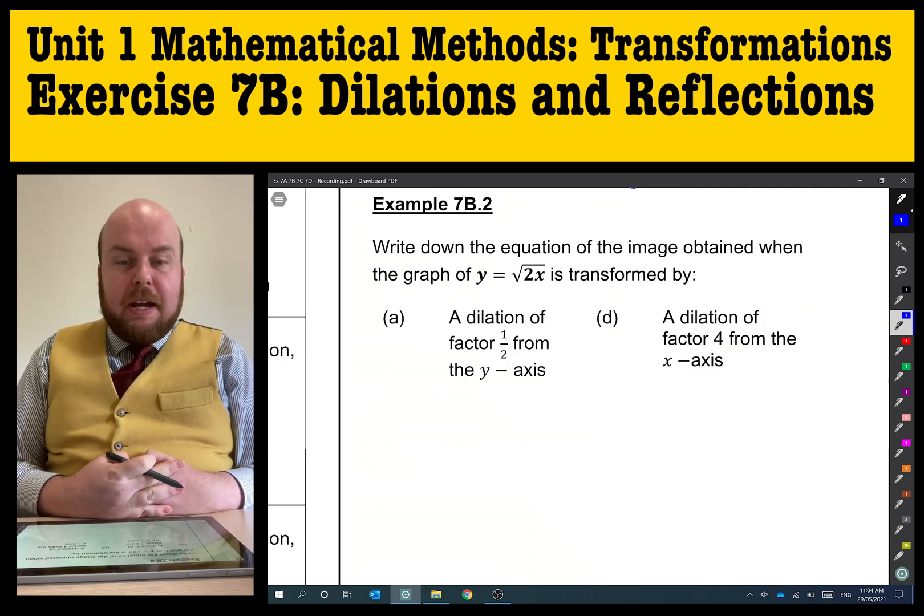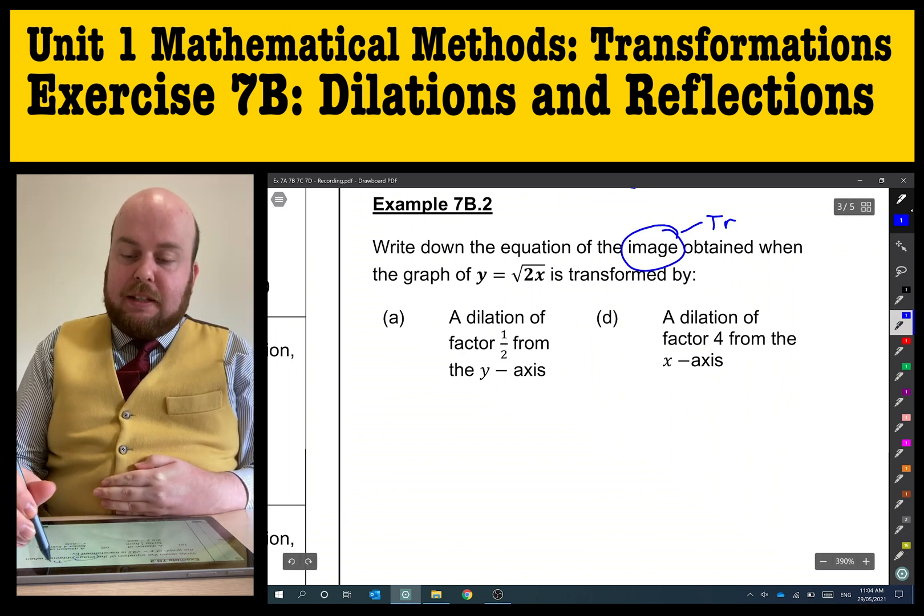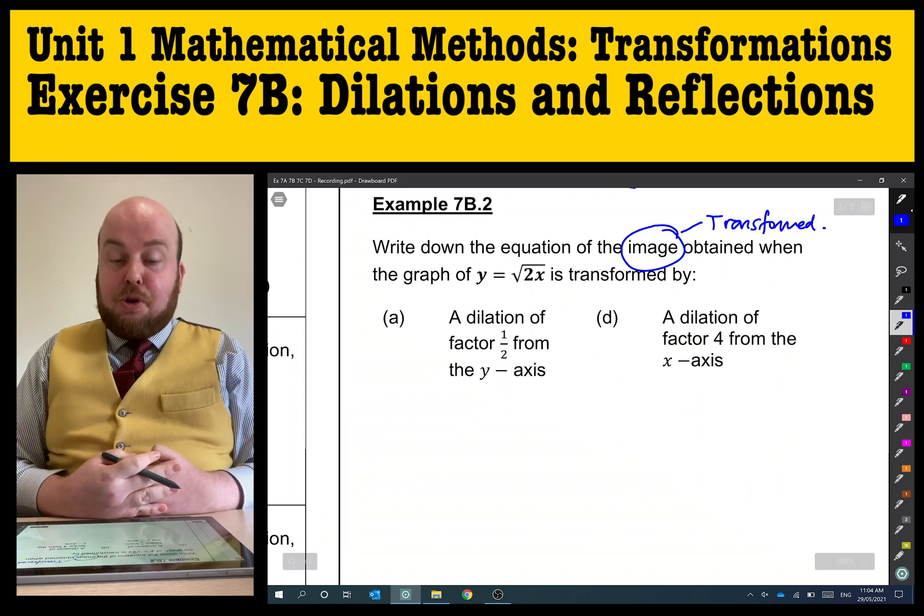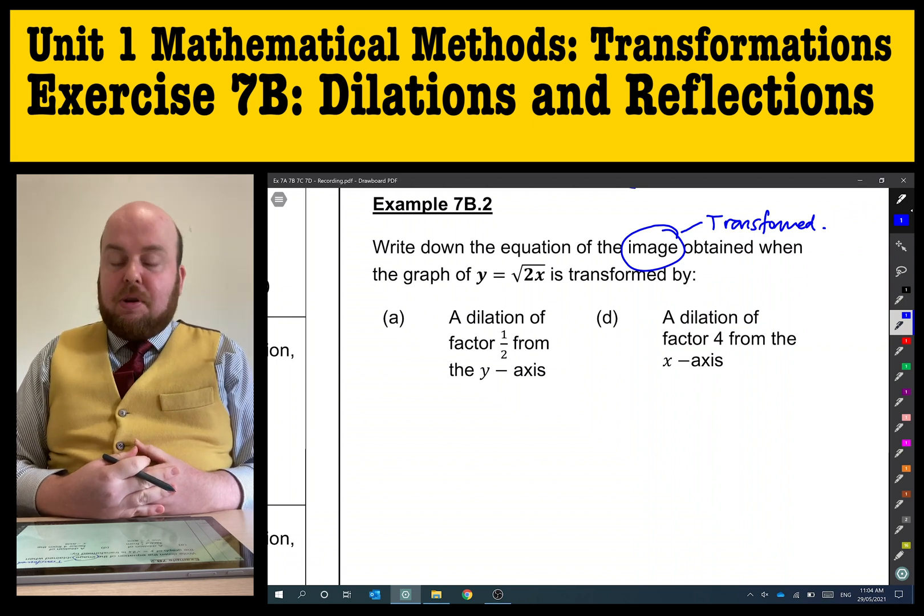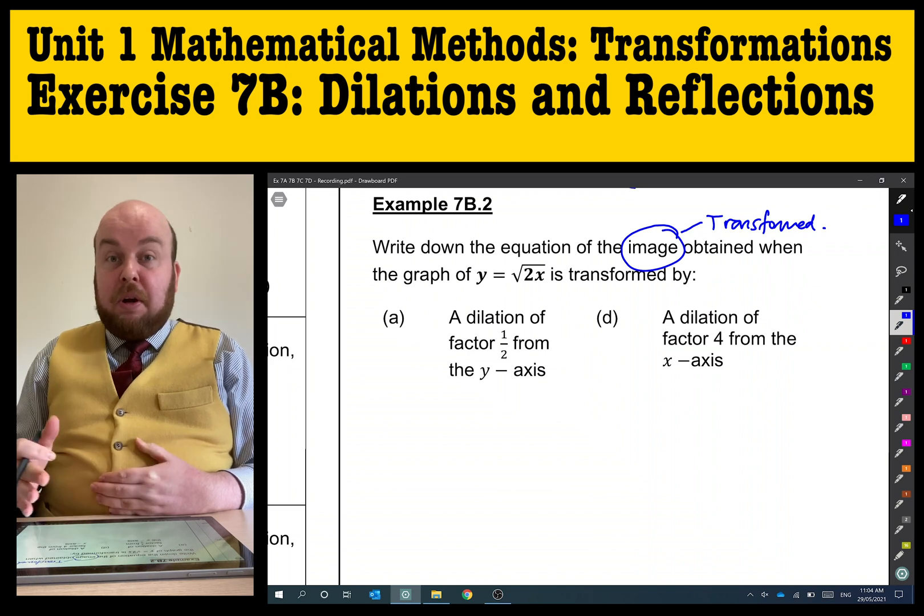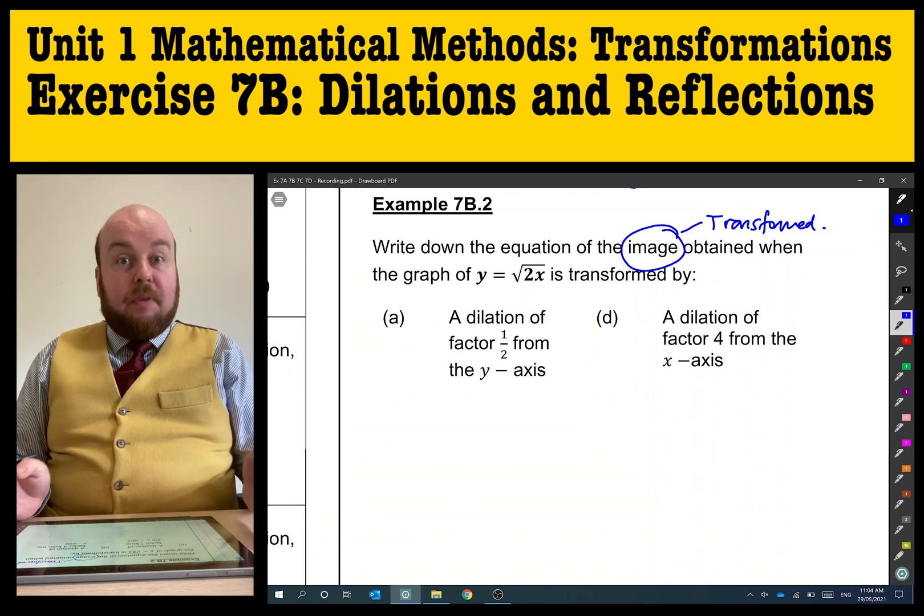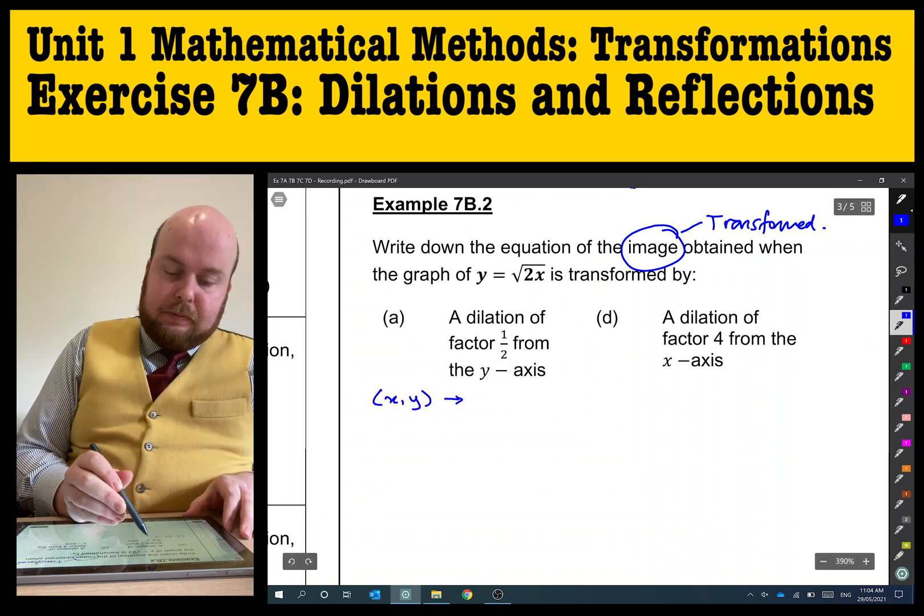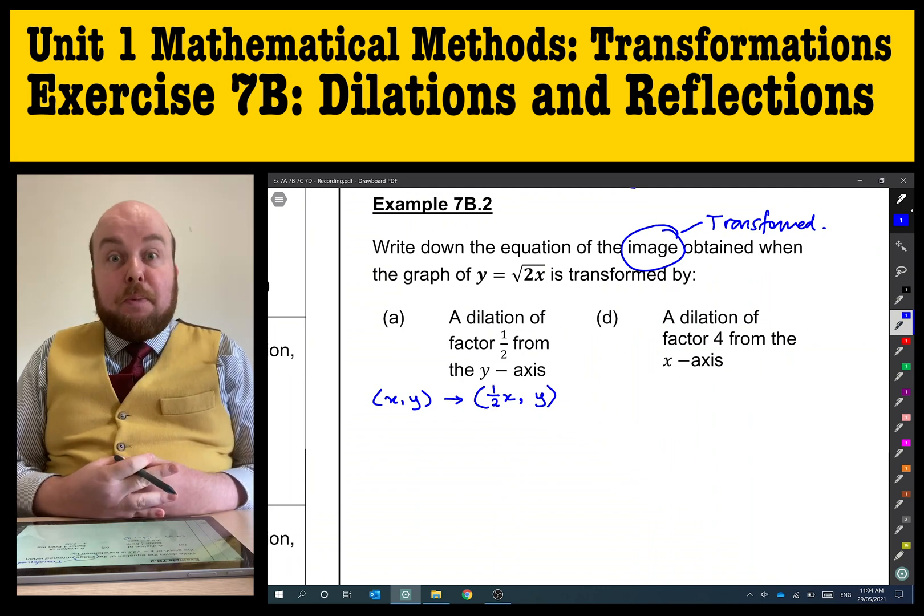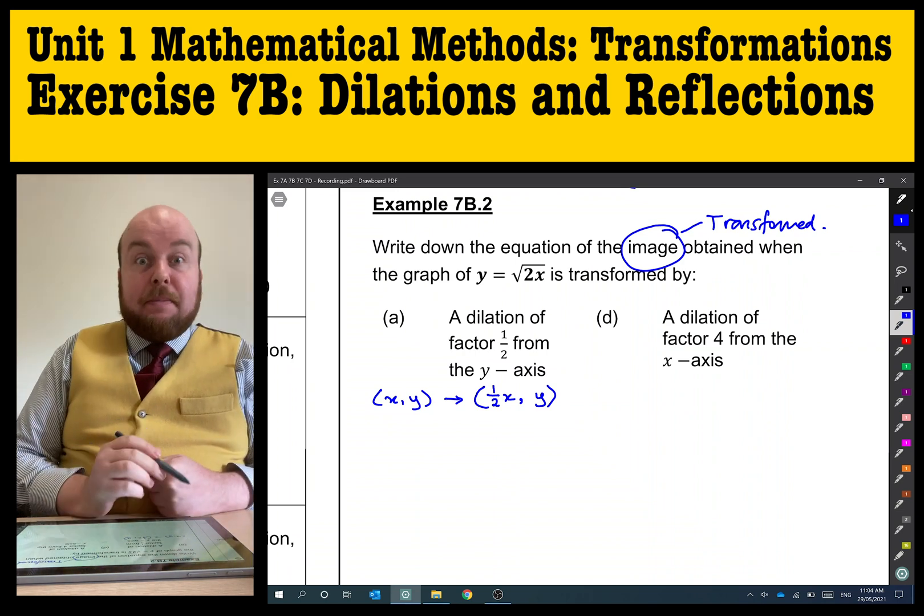Example 7b.2. Write down the equation of the image obtained. The image, remember, means the transformed, the final transformed equation obtained by the graph of y equals square root of 2x transformed by each of these different transformations. I'm just going to work left to right for each of these. I'm going to start with dilation of factor 1/2 from the y-axis. I've just put a 1/2 next to that x. The y's, there's nothing happening to the y's yet, so I'm just leaving that alone.